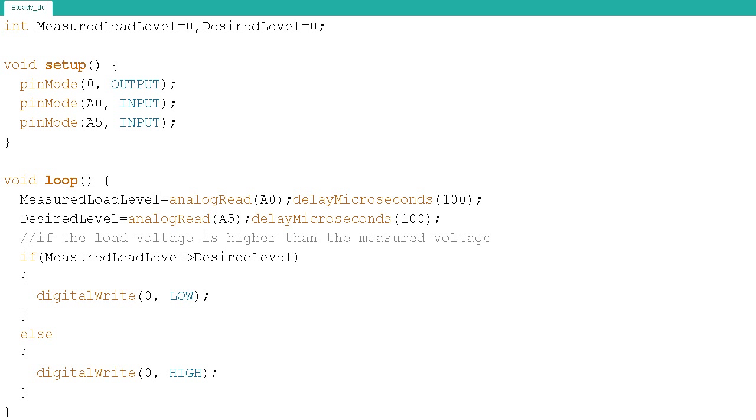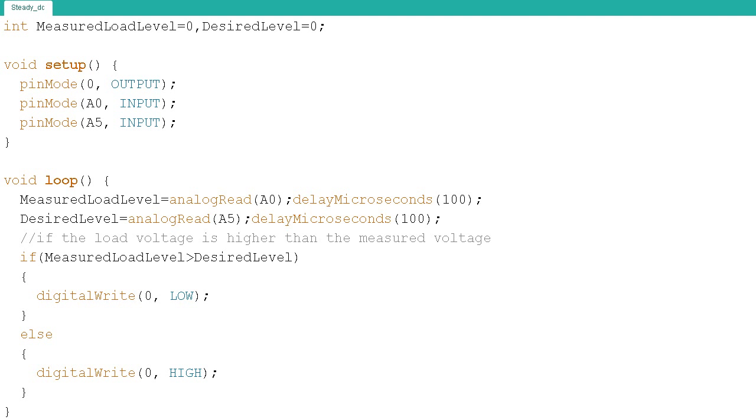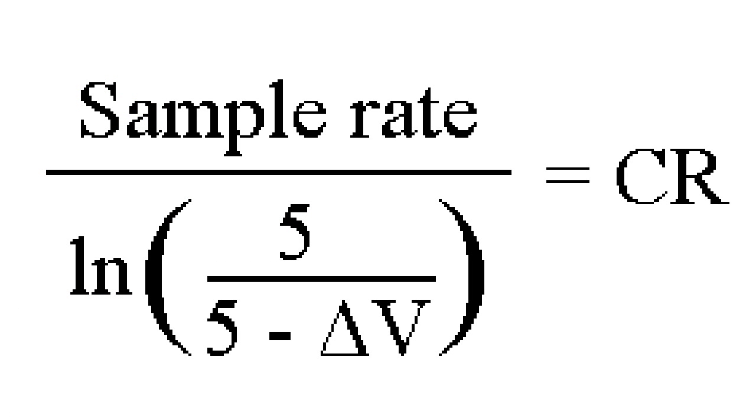If the measured voltage across the load is higher than the desired voltage then this must mean the voltage across the capacitor is too high so the voltage at D0 is switched off, otherwise it is switched on. Here is an equation for determining the values of capacitor and resistor attached to D0.